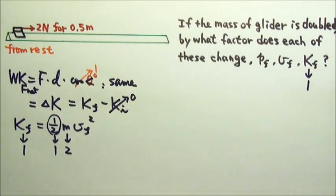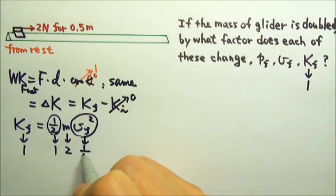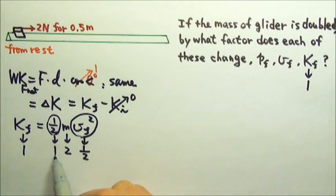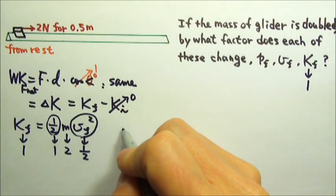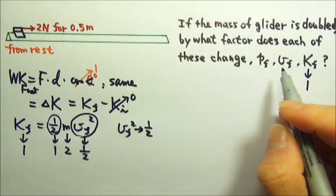The mass is doubled. That means v² must be halved. So these multiplied together equals to 1. So we know the final velocity squared changes by a factor of ½.